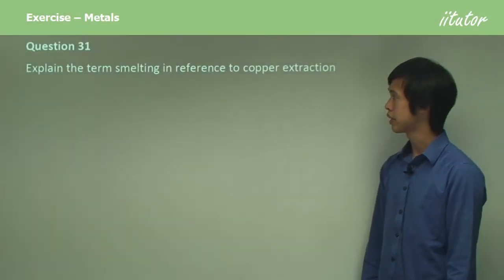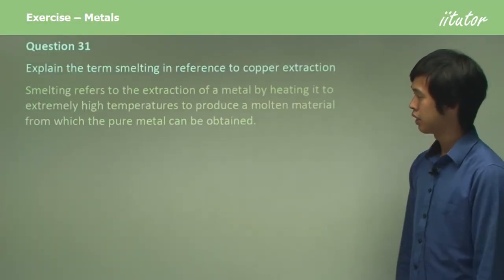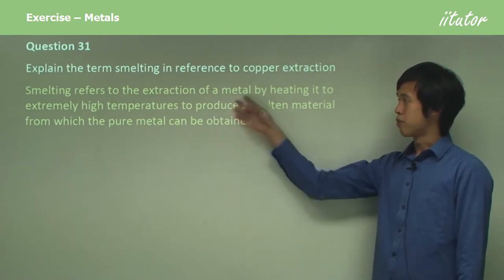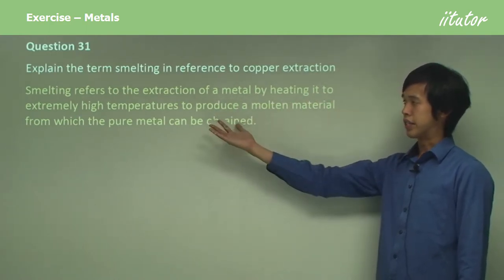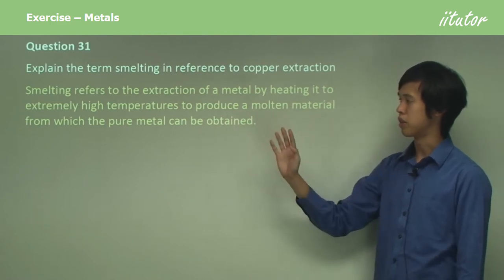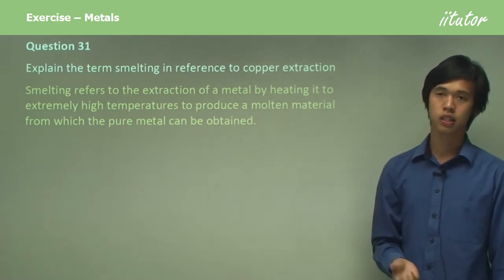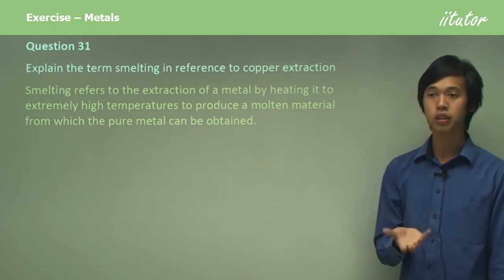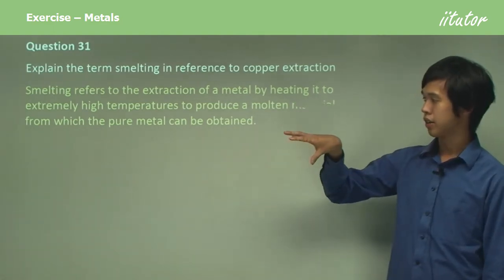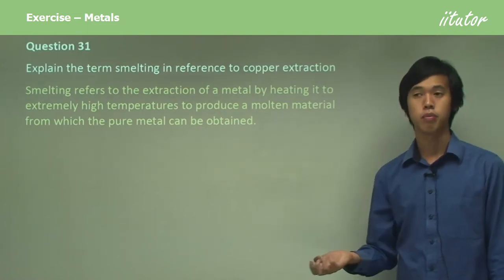Explain the term smelting in reference to copper extraction. Smelting refers to the extraction of a metal by heating it to extremely high temperatures to produce a molten metal from which the pure metal can be obtained. So all smelting is, is heating the ore until it melts, and then making a molten material from which we can extract the metal.